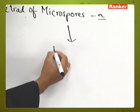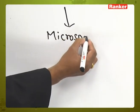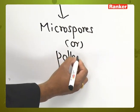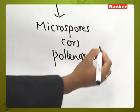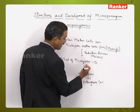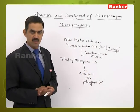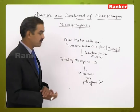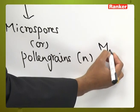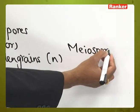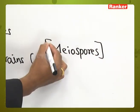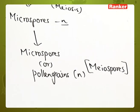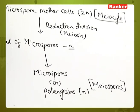When the callose gradually dissolves, all four microspores in the tetrad separate from each other and are now called individual microspores or pollen grains. They are already haploid because they are formed as a result of meiosis. Any cell formed through meiosis is called a meospore, while the microspore mother cell is called a meocyte.